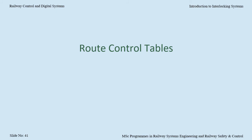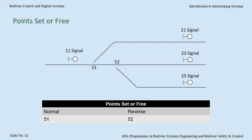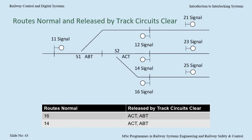The route control tables. Each route will have its own control table. Let's use 11C route — from 11 signal to 25 signal — as our example. A route control table is typically split into three areas: route requirements, signal requirements and route releasing. The first part of the route requirements is usually 'points set or free'. To set 11C route, 51 points must be normal or free to be set normal, and 52 points need to be reverse or free to be set reverse.